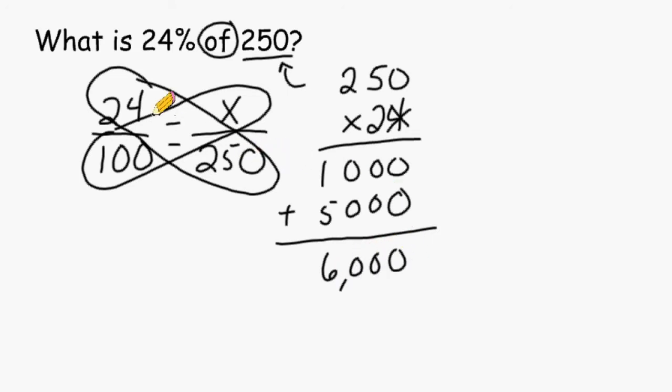Once you have cross multiplied, you can take that total and divide it by the value that is directly diagonal from the x value that you are looking for. So we are going to take 6000 and divide it by 100. Whenever you divide any number by 100, there is a quick method. If you take the decimal point of a number and move it two spaces to the left, it will automatically make your number 100 times smaller. Doing this will make the value 100 times smaller, and you can do this with any number.